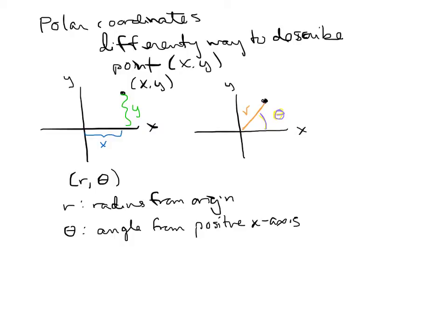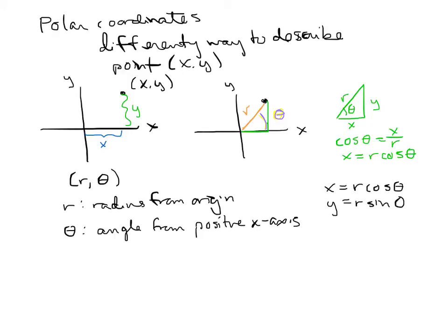Some equations that are useful to describe polar coordinates: x is equal to r times cosine of theta. That's because if we look at the triangle from this coordinate system — we have some distance x, some distance y, r, and theta — the cosine of theta is adjacent over hypotenuse. Solving for x gives you x equals r cosine theta. Similarly, y is equal to r sine of theta.